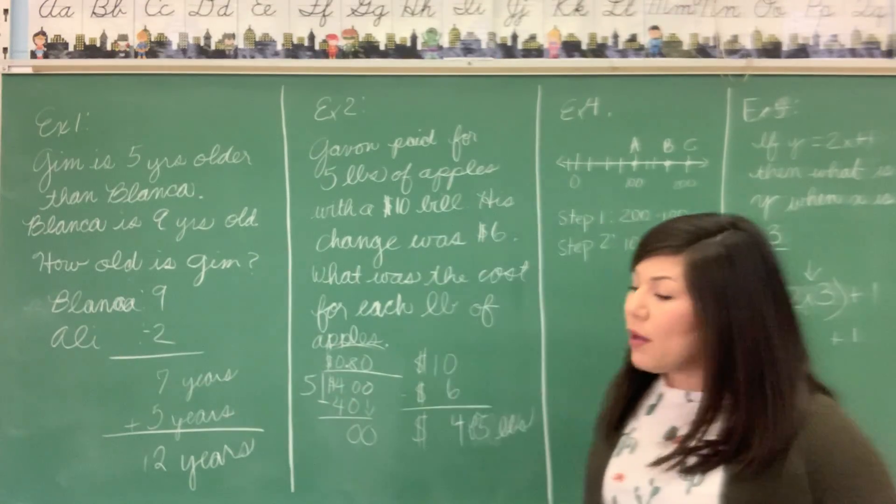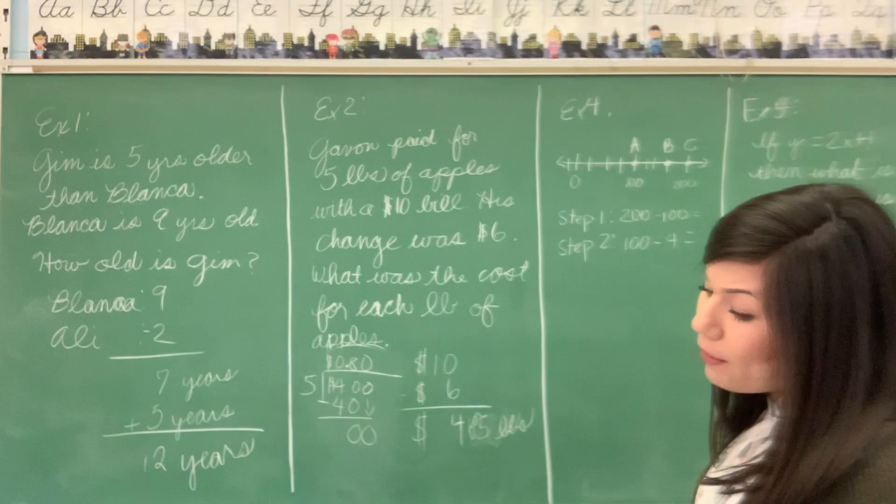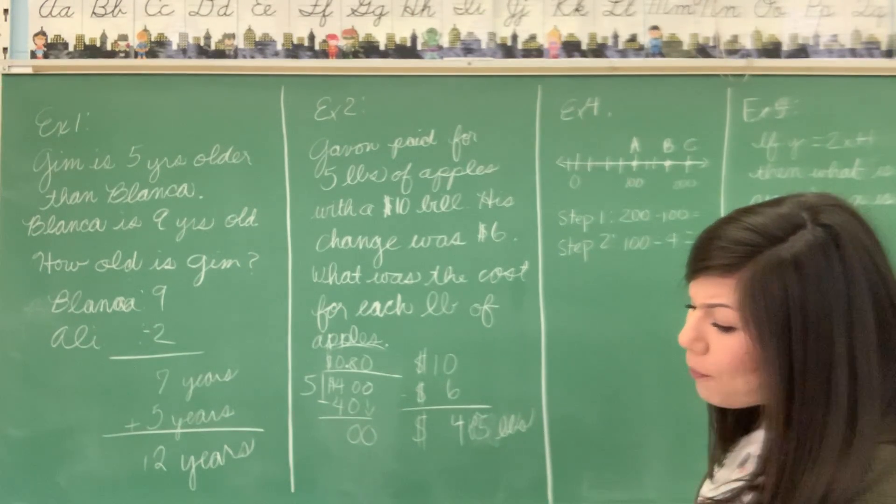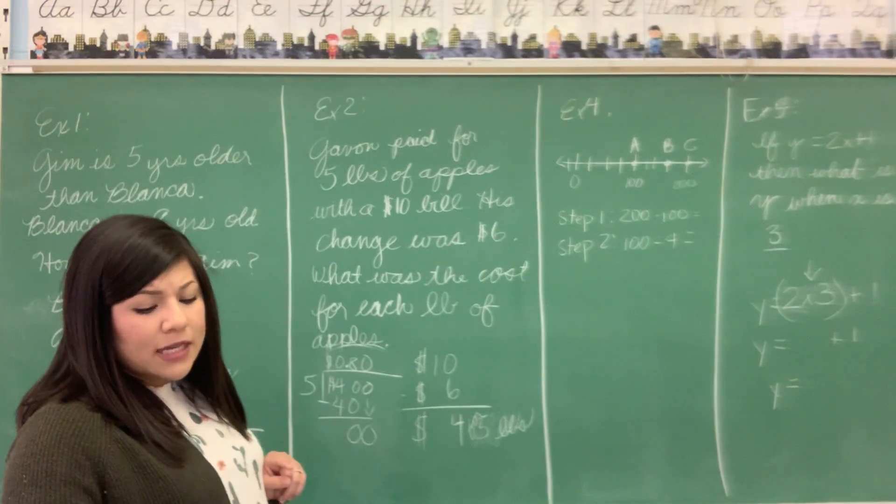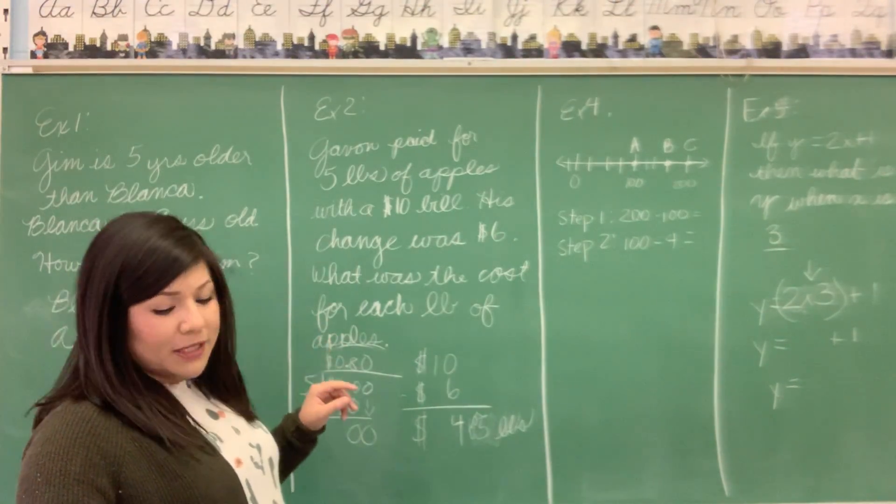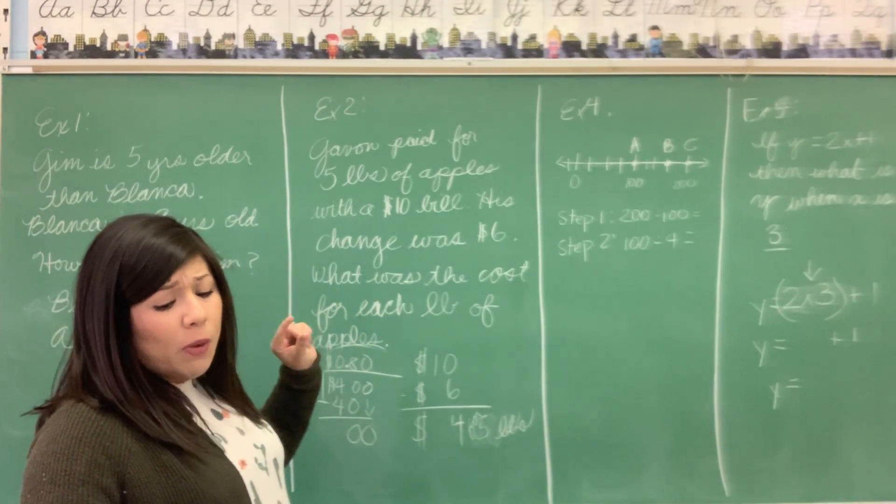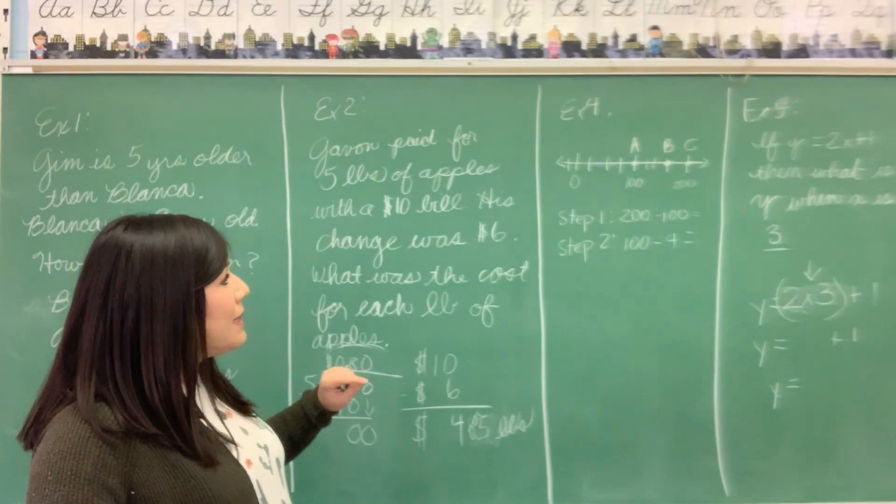Alright, let's look at example four. Point B represents which number on this number line. So sometimes two-step problems are not word problems. We can solve problems like this with two or three steps of arithmetic. Step one is to subtract 200 minus 100.